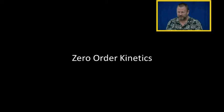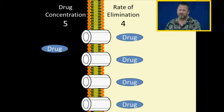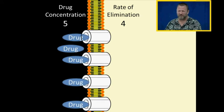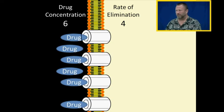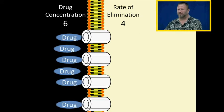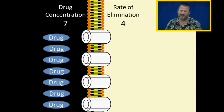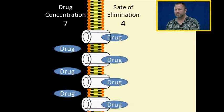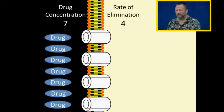Let's talk about zero-order kinetics. When my drug concentration is four, my rate of elimination is four. When the drug concentration is five, the rate of elimination is still four — because we've essentially saturated the elimination pumps. There's more drug in the body than the elimination pumps can eliminate. At concentrations of six or seven, my rate of elimination remains at four because my elimination pumps are saturated. I can add drug and add drug, and I still have a fixed rate of elimination at four.